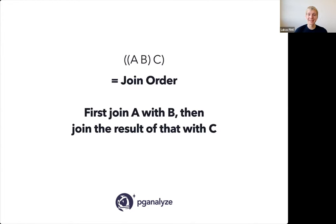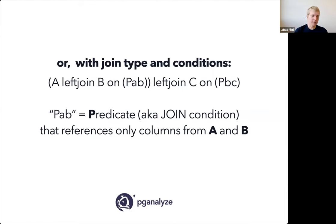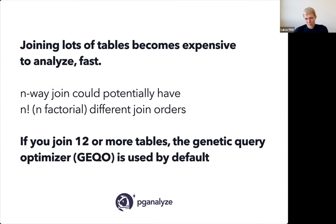Join order can be represented simply using relation names and parentheses: first join A and B, then join in C. You may also see a more elaborate notation on the Postgres hackers mailing list that specifies not just which tables are joined but also the join type (e.g., left join) and the predicate conditions on those joins. This full-detail form is what someone would actually need to discuss when talking about how Postgres would treat a particular optimization.